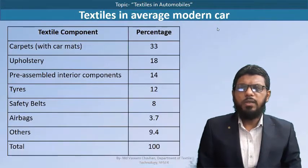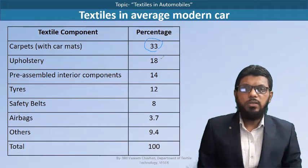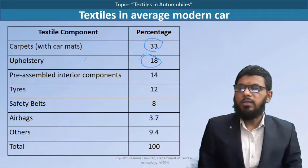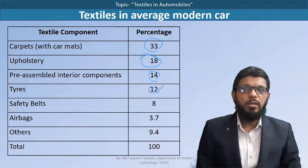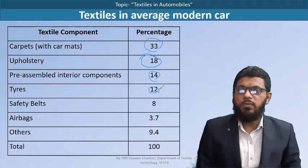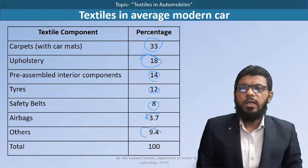Looking at application-wise contribution: the carpet itself contributes 33 percent, upholstery and seat covers 18 percent, interior components 14 percent, and tires 12 percent in terms of weight. The tire cord — the nylon filament or cord used inside the tire — has significant weight, accounting for 12 percent. Seat belts are also quite heavy. This is the contribution of textiles in modern cars.